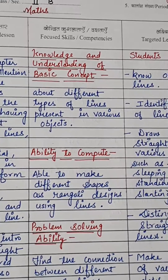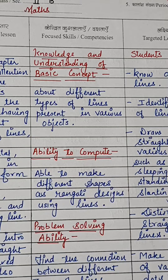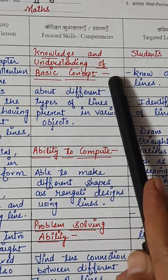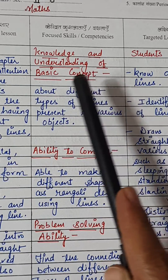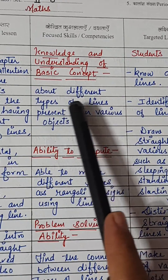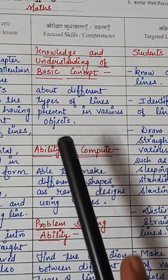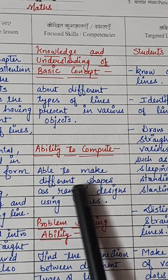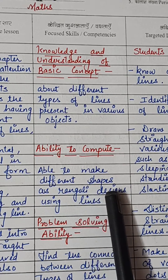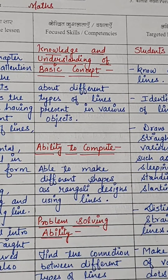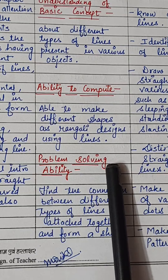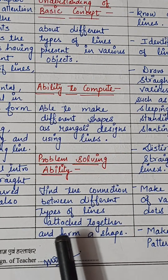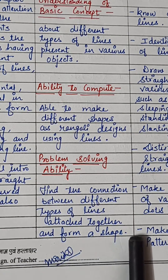Now let's see the competences. In maths we talk about basically three competences. First is knowledge and understanding of basic concepts — all about the different types of lines present in various objects. Second, ability to compute: students will be able to make different shapes such as Rangoli designs using lines. Third, problem solving ability: they will find the connection between different types of lines attached together to form a shape.